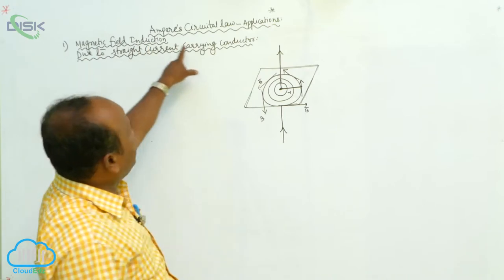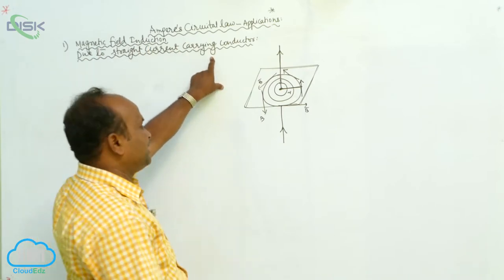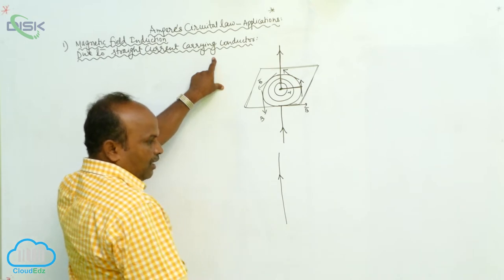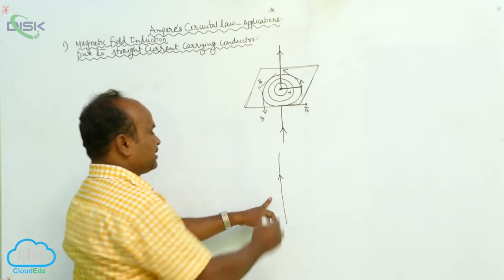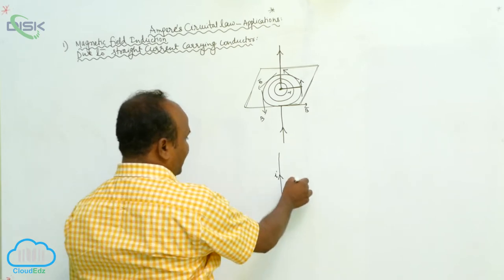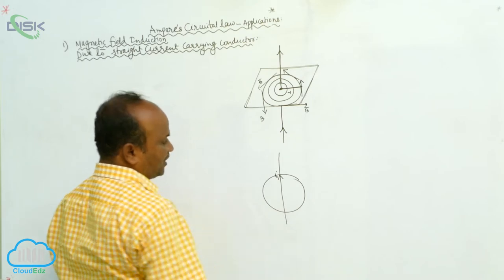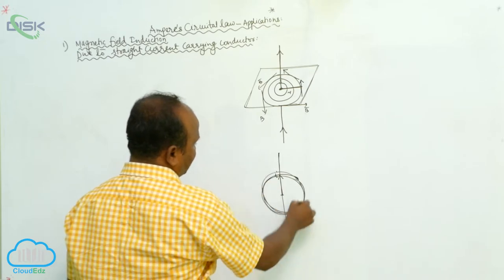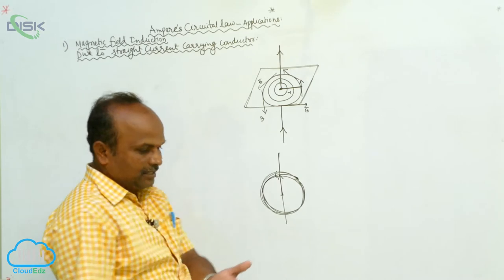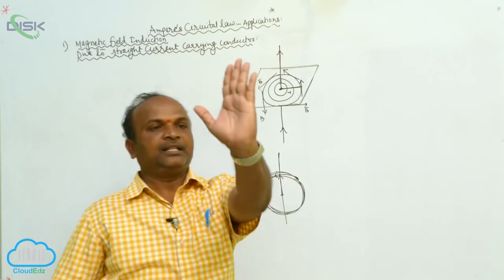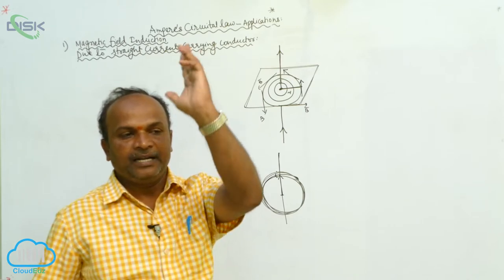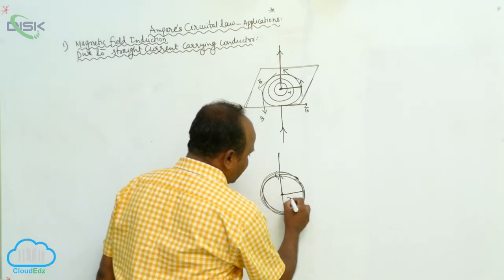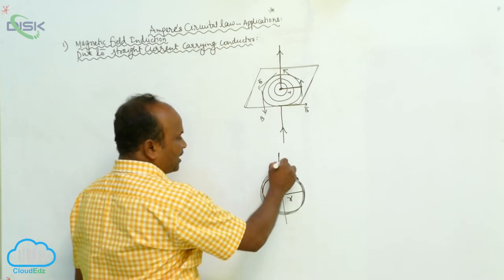Magnetic field induction due to a straight current carrying conductor: by choosing this conductor as a center, imagine a closed path. This is the closed path through which the current carrying conductor passes. From the center through the closed path, it is at a perpendicular distance R. The current passing through this conductor is I.